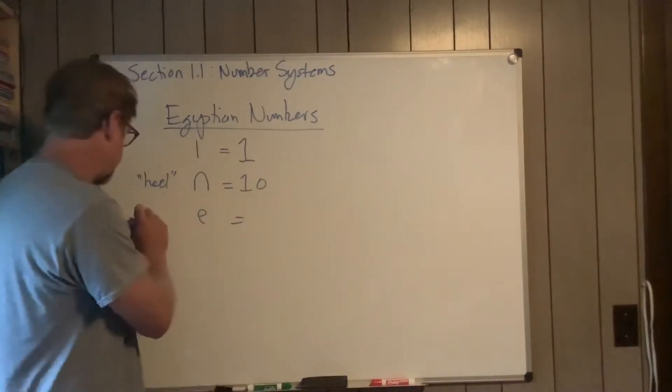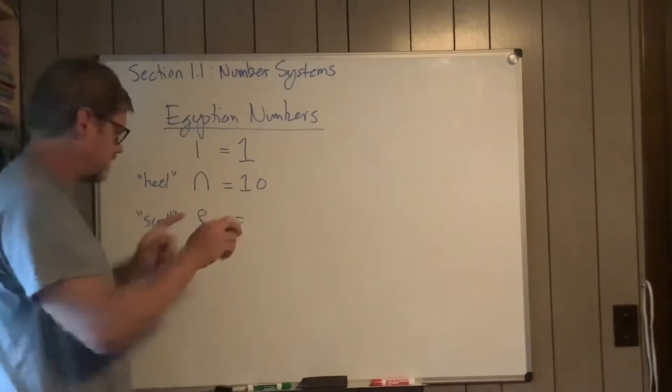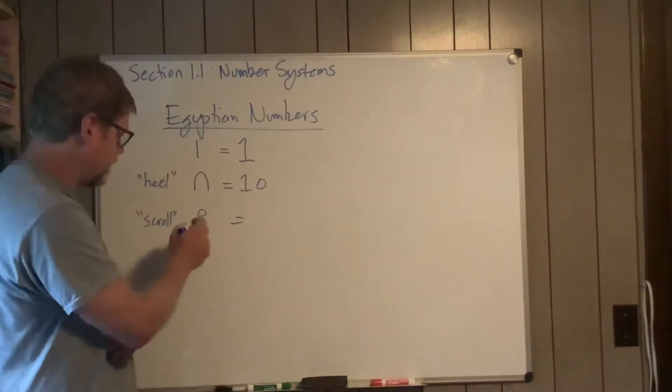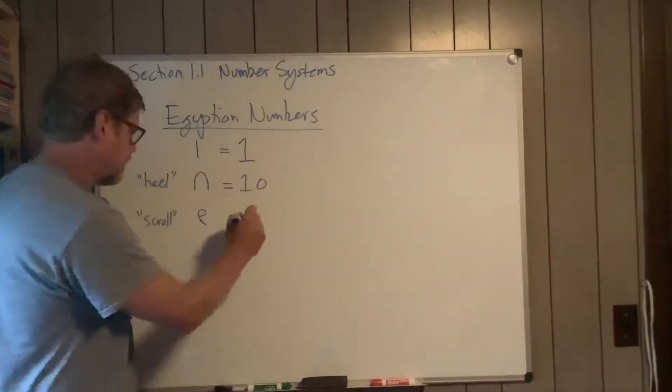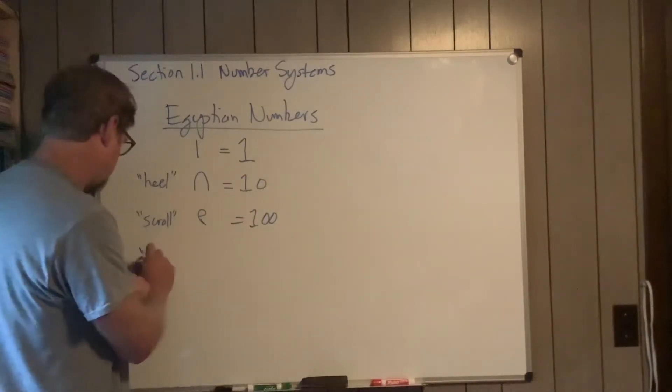This little guy, this is a scroll. I've seen it both ways, the direction of the scroll. It kind of looks like an E here. It's supposed to be a hundred. And then a lotus.